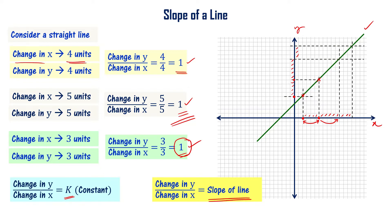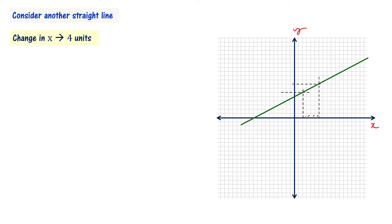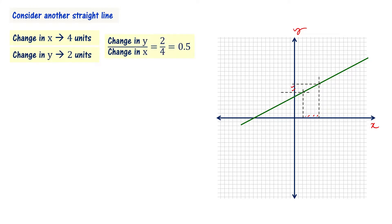So applying the same concept, let's apply for another straight line. We have the same x, y coordinate system. Let's draw another straight line — this time the slope is different. In this case, change in x is 4 units and change in y is 2 units. It means change in y by change in x equal to 2 by 4, that is equal to 0.5. So slope of this line is 0.5.